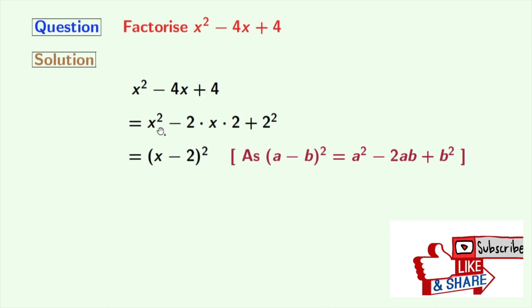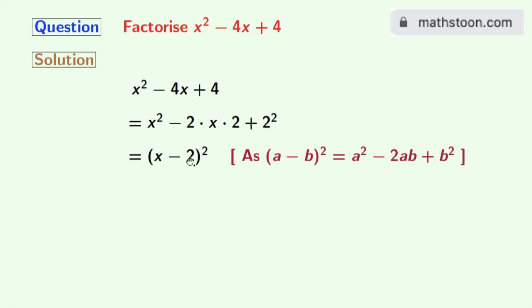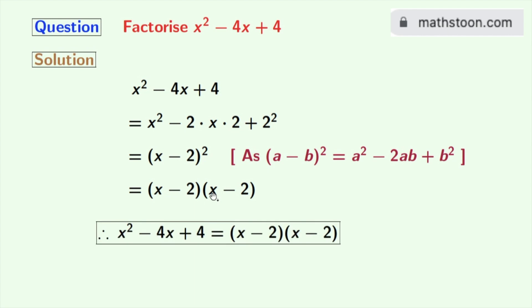Applying the formula, we get this is equal to x minus 2 whole square. Now as the exponent of this is 2, we can rewrite this as the product of 2 copies of x minus 2. So finally, we get x squared minus 4x plus 4 as the product of x minus 2 and x minus 2.